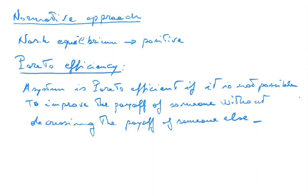A Pareto efficient outcome is one where, if you increase the payoff of someone, then someone else has to pay the cost. The idea is that you would like an economic system, from a normative approach, to be Pareto efficient.